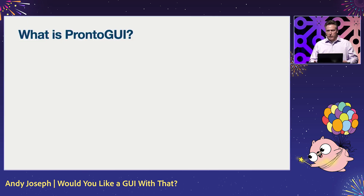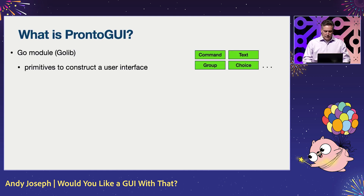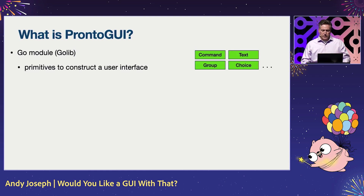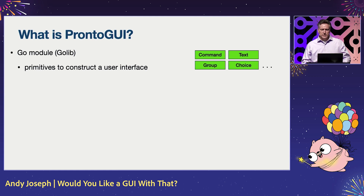So what is Pronto GUI? First, there is a Go module called GoLib, and this module is used to construct primitives to build a user interface. You can think of primitives as being the logical things you want to see in your user interface, such as a command button, a text field, and so on.